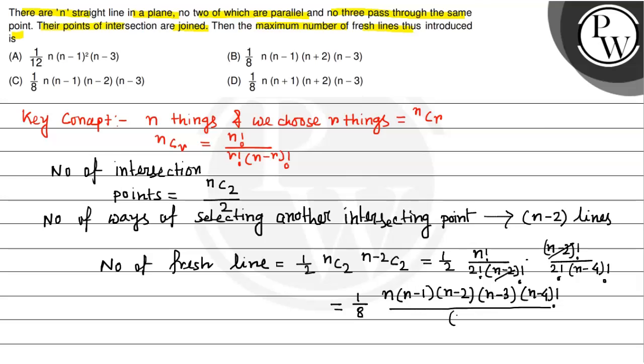Divided by n minus 4 factorial. So what we get finally is one by eight n into n minus 1 into n minus 2 into n minus 3.